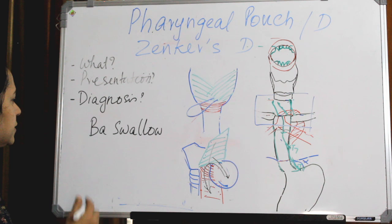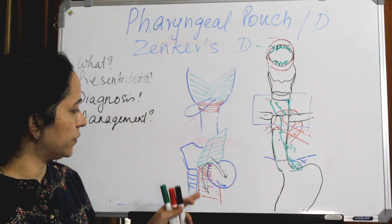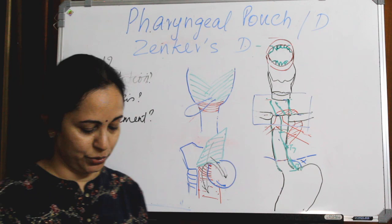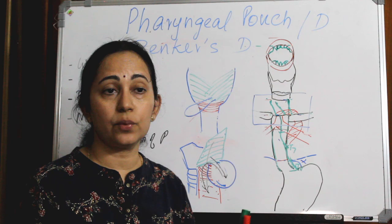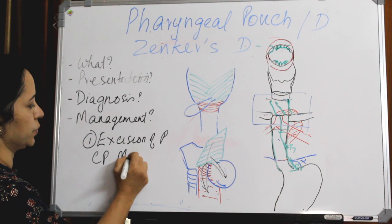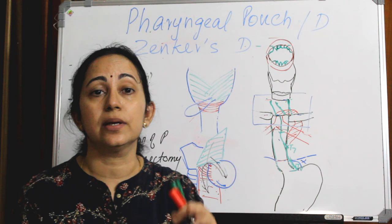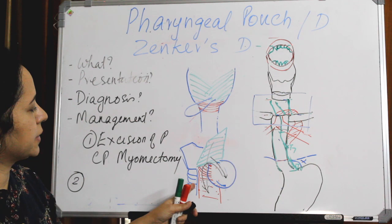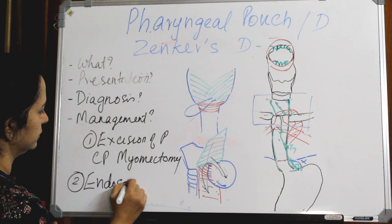For treatment, you can excise the pouch - excision of the pouch is one treatment. Since the main factor is that the cricopharyngeal sphincter is not relaxing, along with the excision of the pouch, we can also do cricopharyngeal myotomy - cutting the fibers of the cricopharyngeal sphincter so that it will relax. Another treatment is endoscopic stapling diverticulotomy, which is the preferred method.